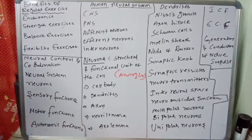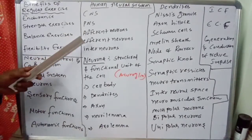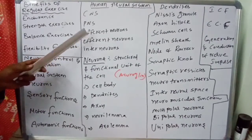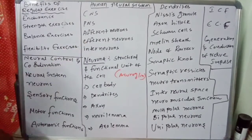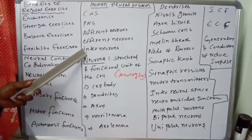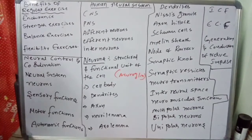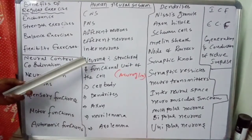There are three functional classes of neurons. Afferent neurons take the sensory impulse to the central nervous system. Efferent neurons carry the motor impulses from the CNS to the effector organs. Inter-neurons lie entirely within the central nervous system, between the afferent and efferent neurons. The central neural system lacks connective tissue, and the inter-neuronal space is filled with neuroglia.